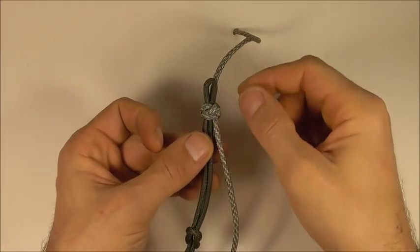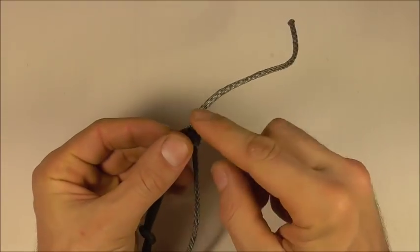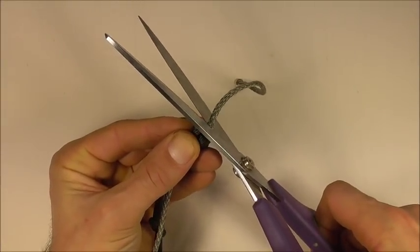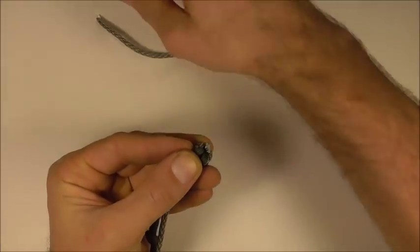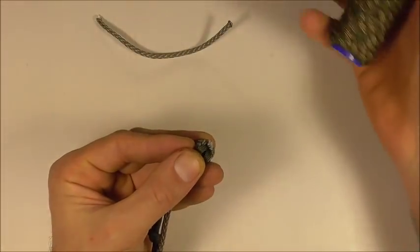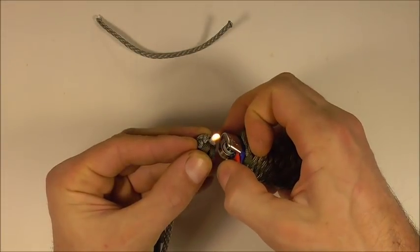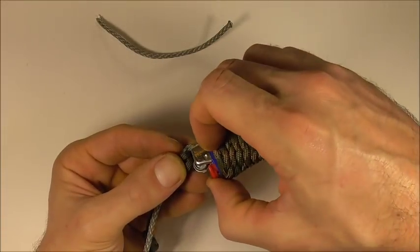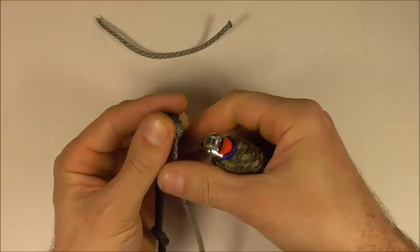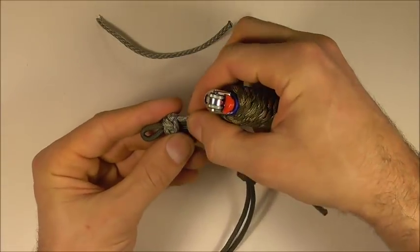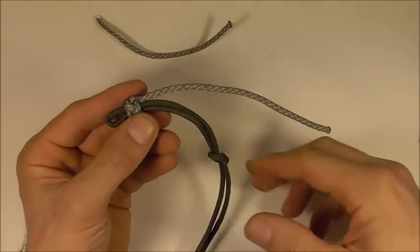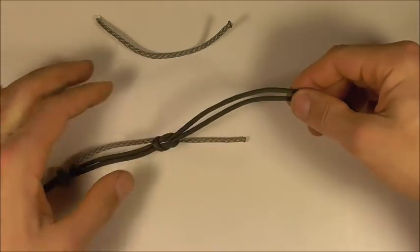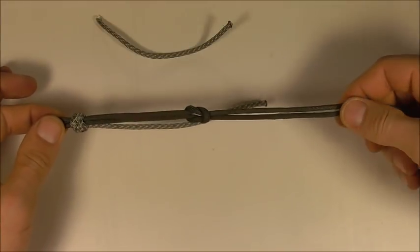Once we have this ranger bead nice and tight, we can cut off these excess pieces and then singe them off with a lighter. Just singe them off and then press them flat. Do the same to the other side. Then we want to tie one more ranger bead and place it on the other side just so we even the bracelet up.